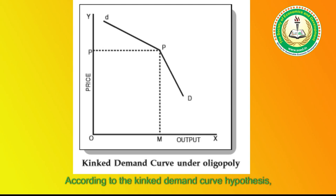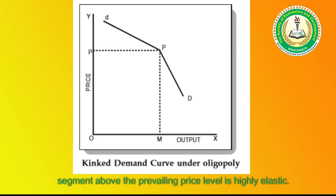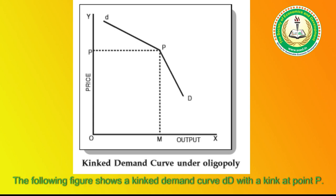According to the kink demand curve hypothesis, the demand curve facing an oligopolist has a kink at the level of the prevailing price. This kink exists because of two reasons: first, the segment above the prevailing price level is highly elastic; second, the segment below the prevailing price level is inelastic. The following figure shows a kink demand curve dd with a kink at point p.